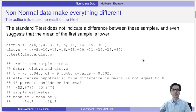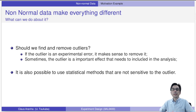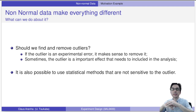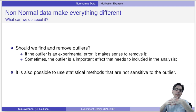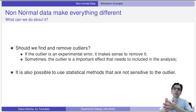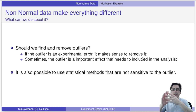So what do we do when we identify an outlier? If we find out the outlier is an experimental error — for example, someone put an extra zero when entering the data, or the measurement device was broken — then it makes sense to remove the outlier. However, sometimes the outlier is not an error but an important effect that needs to be included in the analysis.